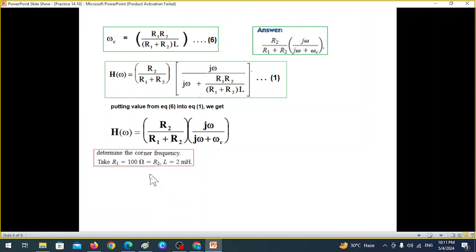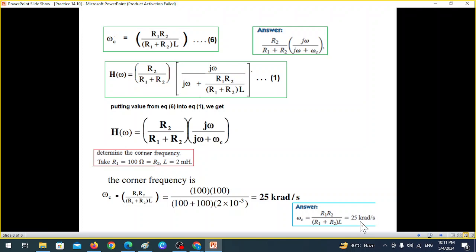Now, the third part of the question is determine the corner frequency for R1 and R2 100 ohms and L this value. We know this is the formula for corner frequency. So in this plugging the value of R and L the answer we get is 25 kiloradians per second. And that is what is given in the book 25 kiloradians per second. So I hope you have been able to follow this. Please let me know through your comments. Thank you.